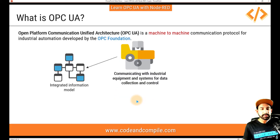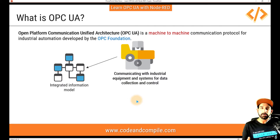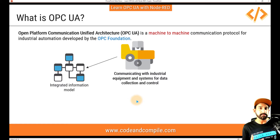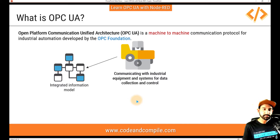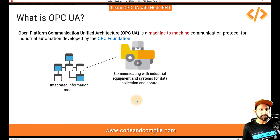The first feature is an integrated information model. The OPC UA model has a standardized structure in which we talk about nodes. Every data has a specific node ID, and every ID has a specific name and syntax. We will understand this in more detail when we create our own server, but in short, it is a standardized information model that follows defined rules.